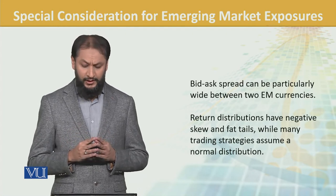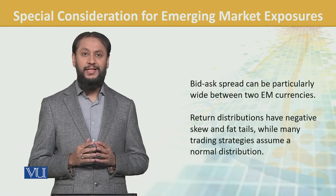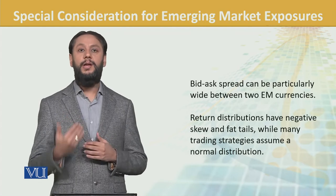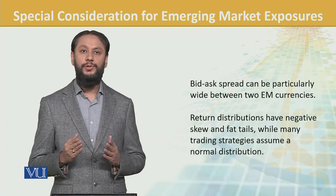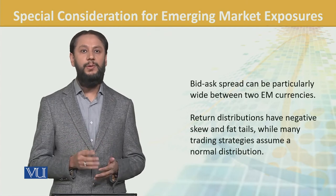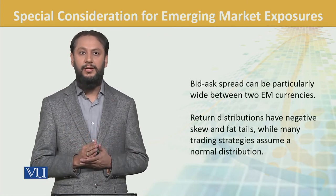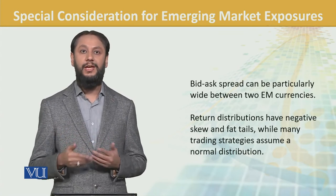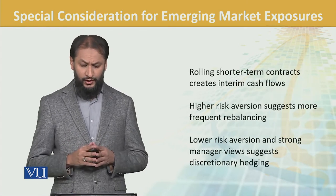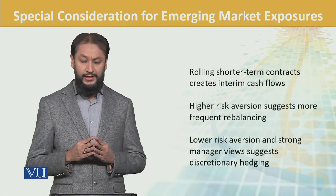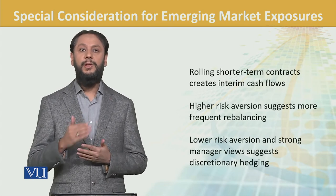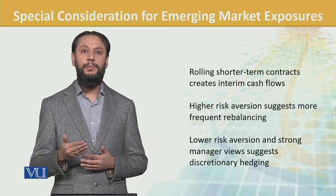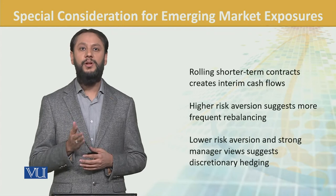Return distributions in emerging markets have negative skew and fat tails — yani ke normal distribution nahi hoti, kisi taraf tilt ho sakti hai, aur fat tails aur skewed results possible hote hain. Rolling short-term contracts create interim cash flows, aur jab aap dobara roll karte hain toh kaafi transaction cost karni pad sakti hai, jo emerging markets mein higher dekhi gayi hai.